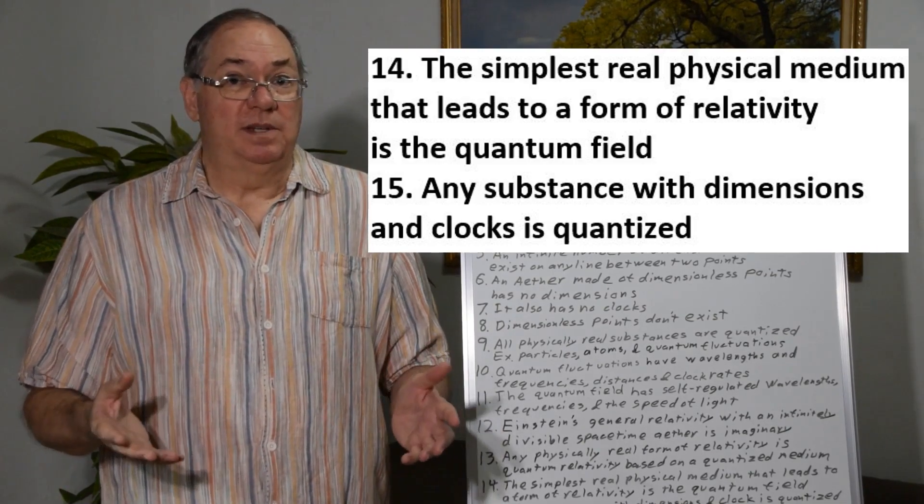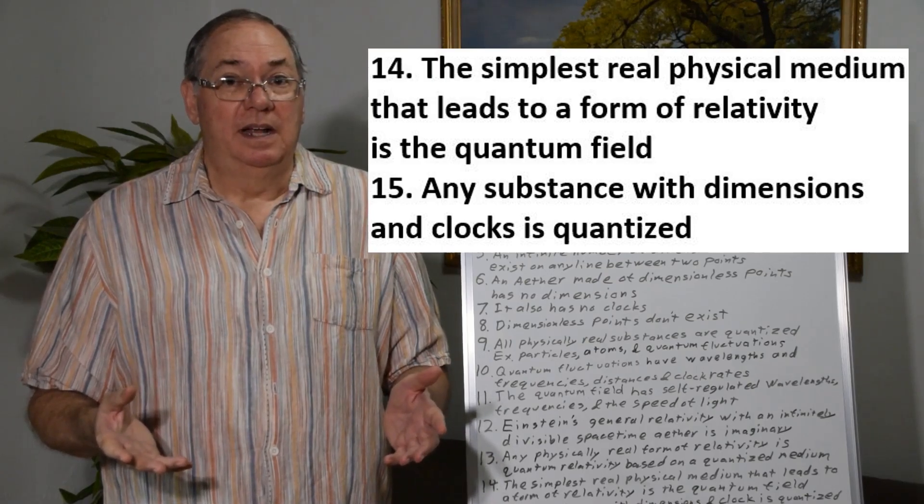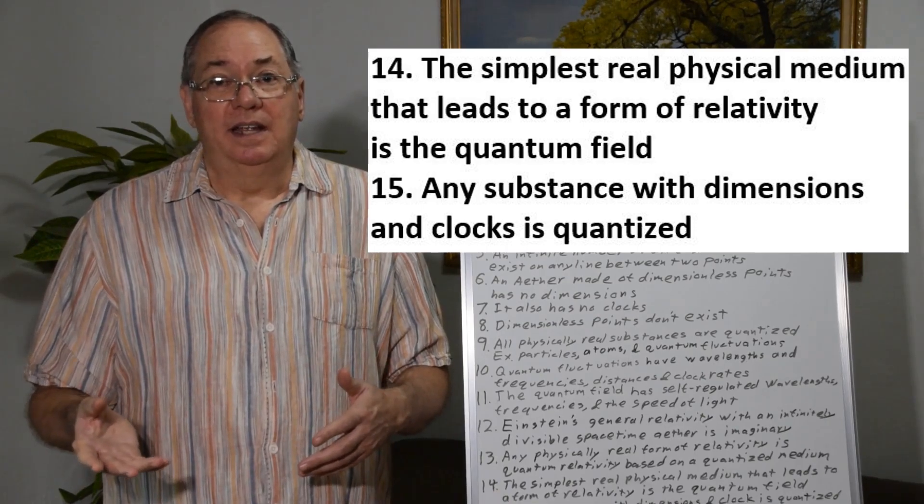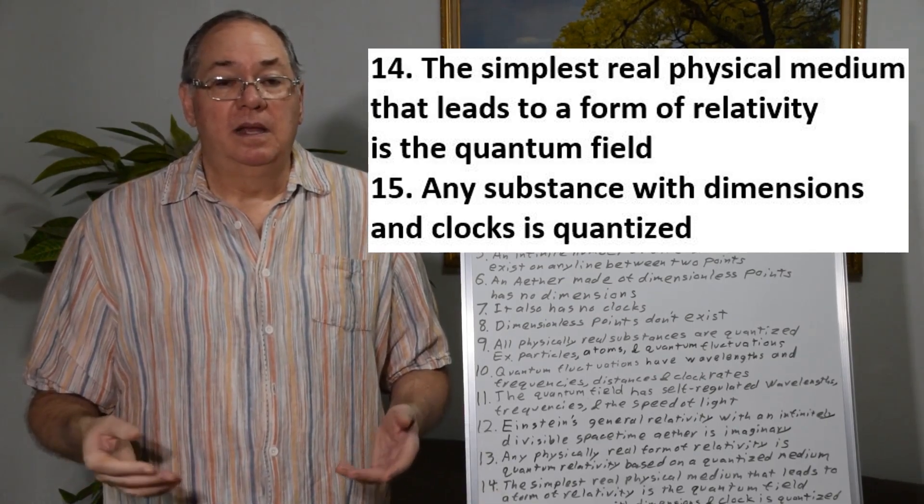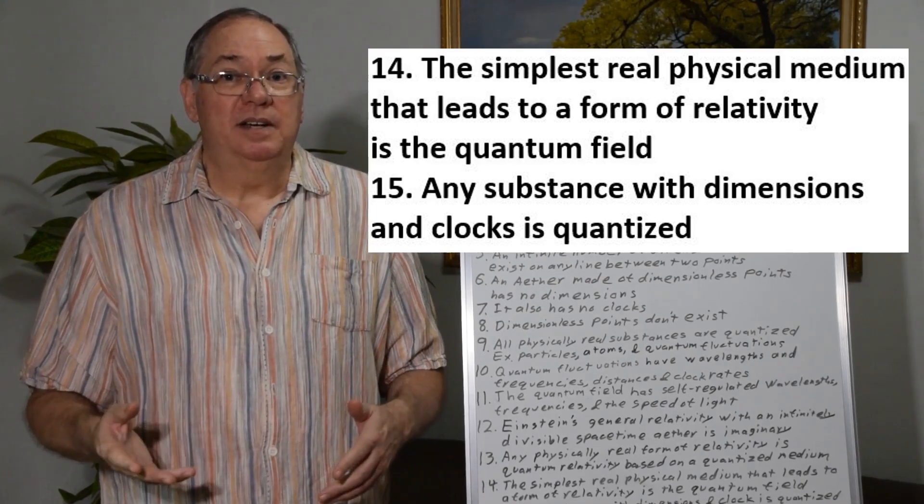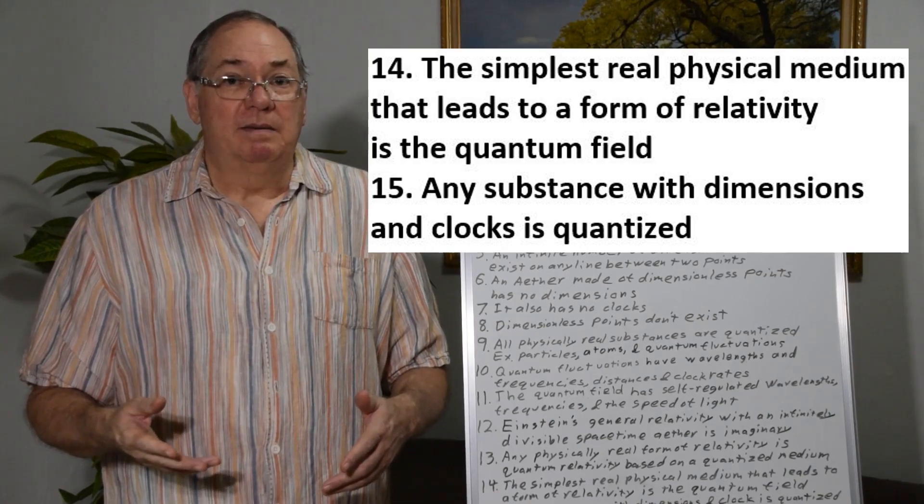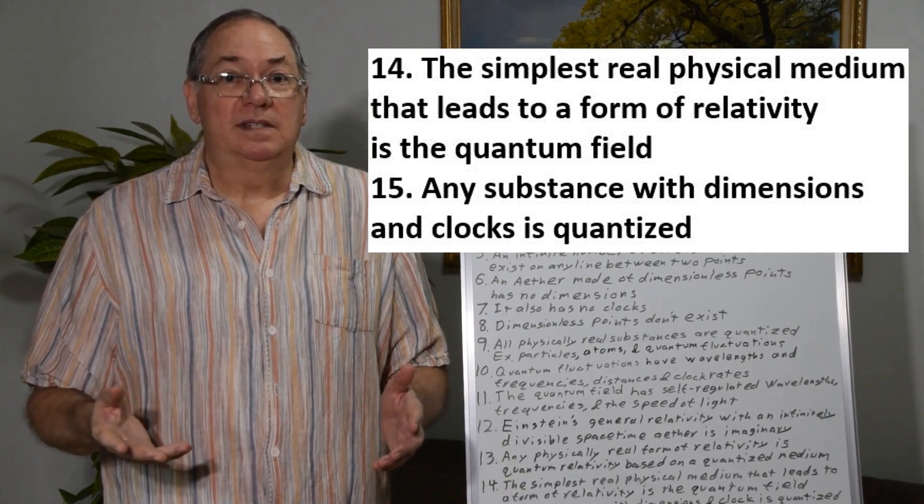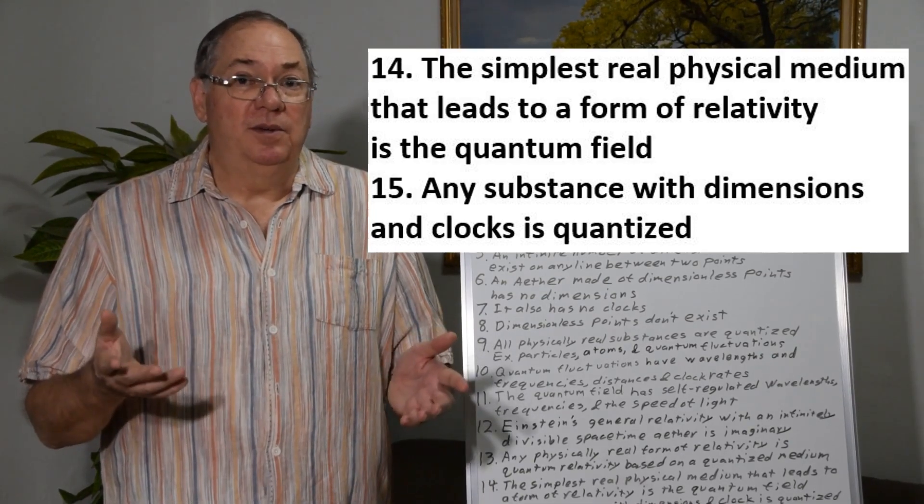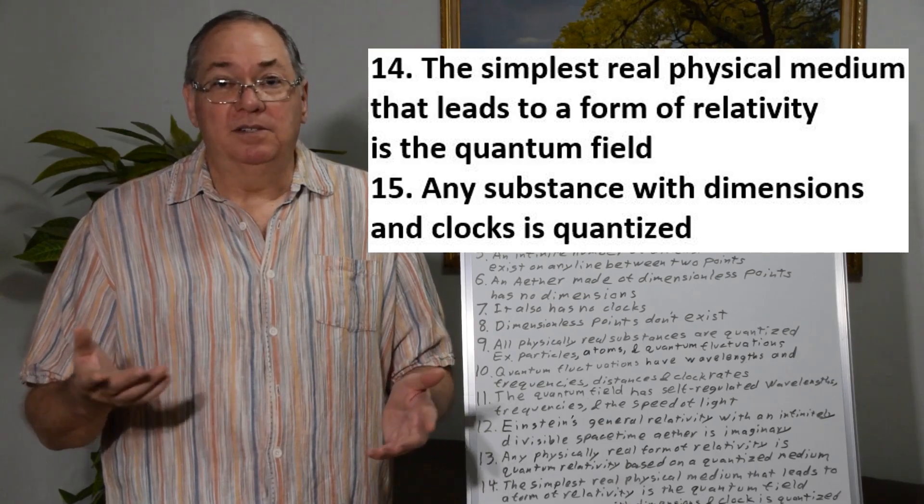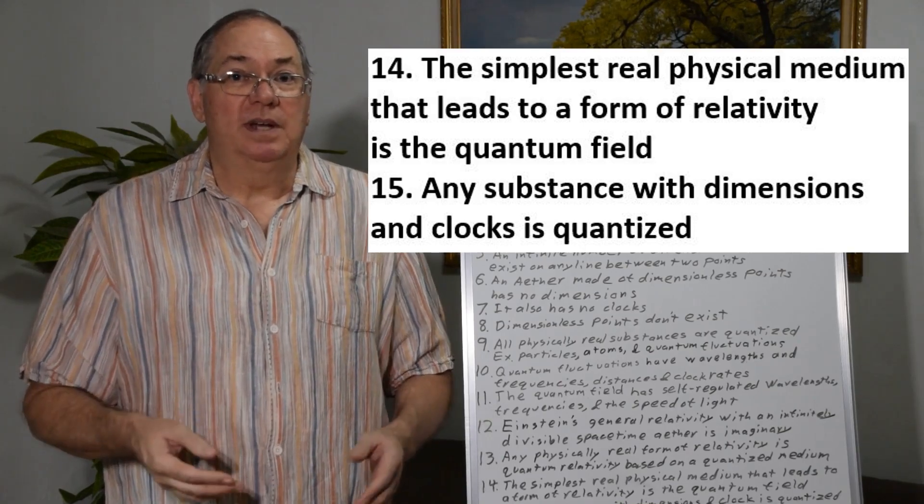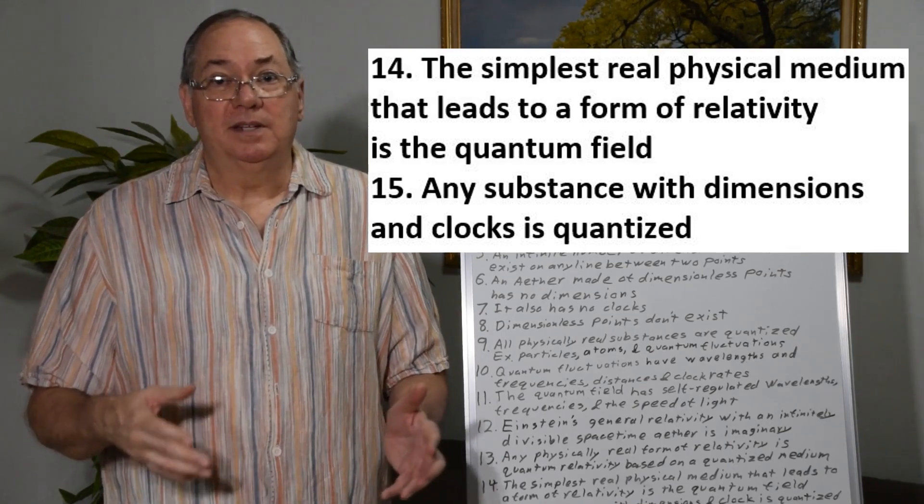And any other substance we might consider that has distances and clock rates is going to be a quantized medium. So the key is if we really want to have real physics and not imaginary physics made by mathematicians who aren't physicists then we have to start with a quantized field and build up to a theory of special and general relativity and later gravity that's consistent with a quantized medium that has real dimensions and real clock rates.